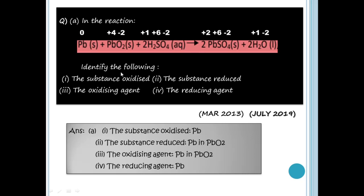So we will see what is oxidized and what is reduced. If oxidized, there will be an increase in oxidation number. First, we will see Pb: Pb starts at 0, and then Pb is +2 in the product. So Pb is oxidized — its oxidation number increased from 0 to +2.